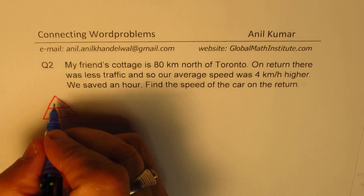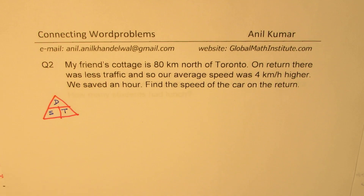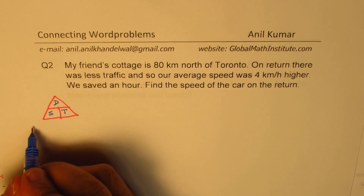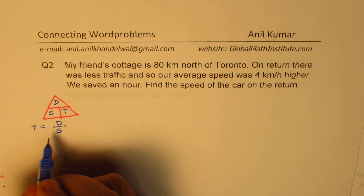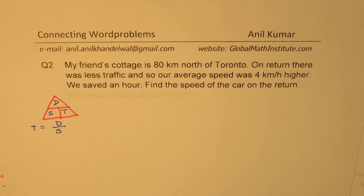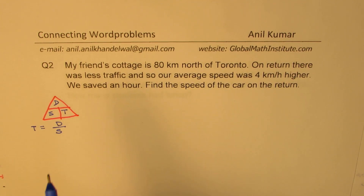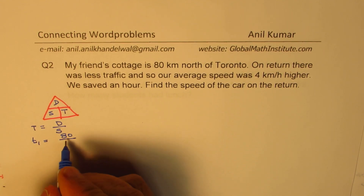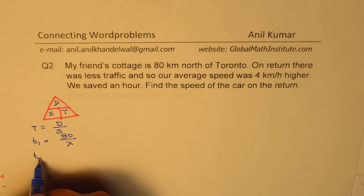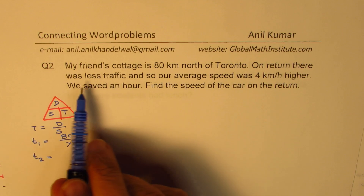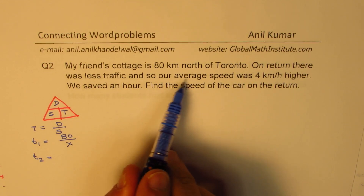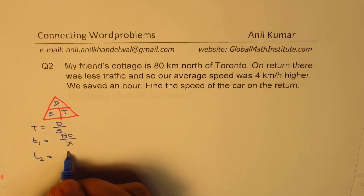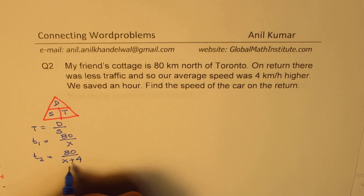We write the equation in terms of time. Let T1, time while going, be 80/X. Then T2, while returning, is 80/(X+4) since speed is 4 km/h higher, which means less time. While going we took more time because we went slower. The difference between the two times is 1 hour.